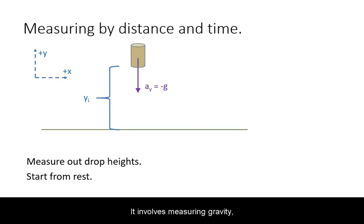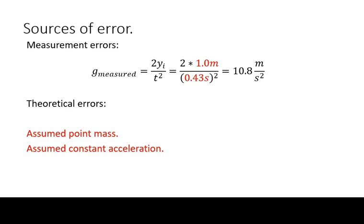It involves measuring gravity by dropping an object from a known height and measuring the time of drop. There can be many sources of error explaining why the deduced gravity might not match the theoretical value.